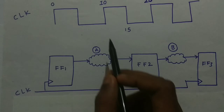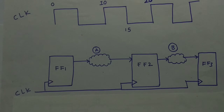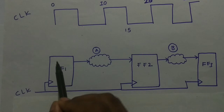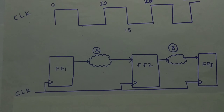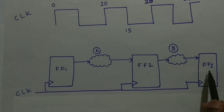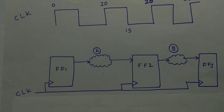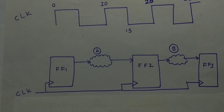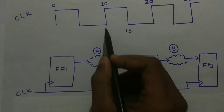That data will reach flip-flop 2 at 10. Let us consider an ideal case where setup time, hold time, clock skew, and clock delays are all 0. So if the launch edge of flip-flop 1 is at 0, we get the data at 10. Similarly, if we launch data at 10, we get the data at flip-flop 3 at 20. Now, what if combinational logic A is very large and the delay is greater than 10 nanoseconds?